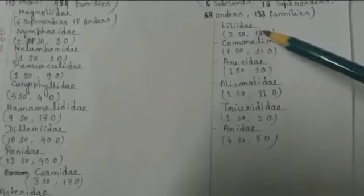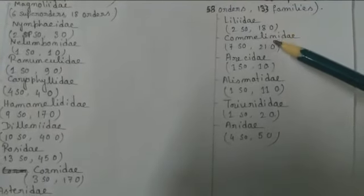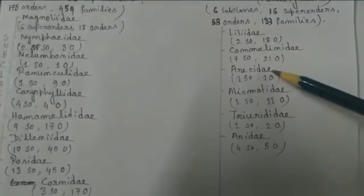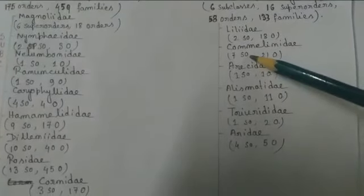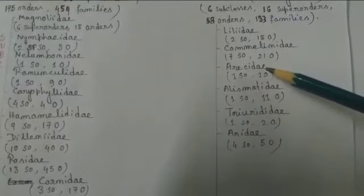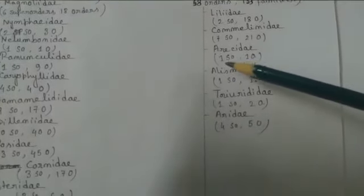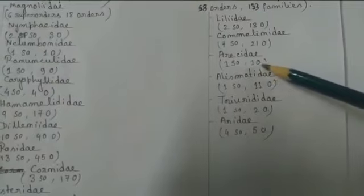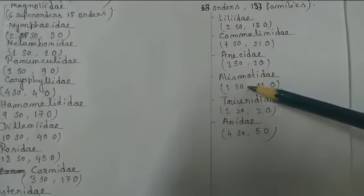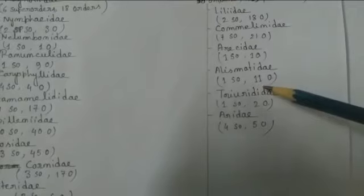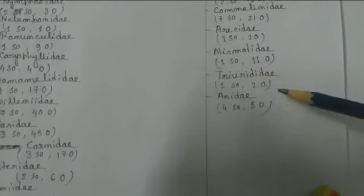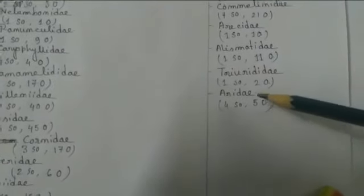The first subclass of Liliopsida is Liliidae, which has 2 superorders and 18 orders. Next, Commelinidae has 7 superorders and 21 orders. Next, Arecidae has 1 superorder and 1 order. Next, Alismatidae has 1 superorder and 11 orders. Next, Triurididae has 1 superorder and 2 orders. The last one is Aridae, which has 4 superorders and 5 orders.